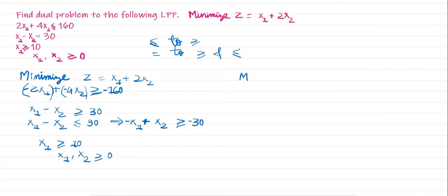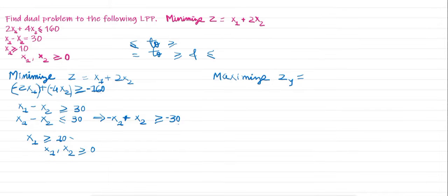Now we convert this to the dual form. While converting to the dual form, minimization becomes maximization, and the dual objective function is zy equal to sigma bi yi. All these rules I have already explained in the previous video. Our bi values are minus 160, 30, minus 30, and 10, corresponding to y1, y2, y3, and y4. So the dual objective function is: maximize zy equal to minus 160y1 plus 30y2 minus 30y3 plus 10y4.